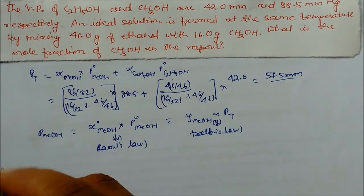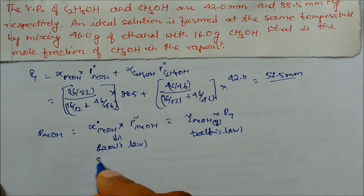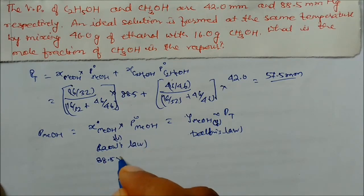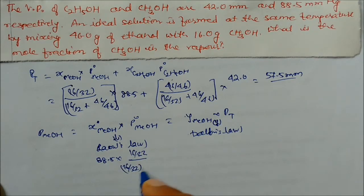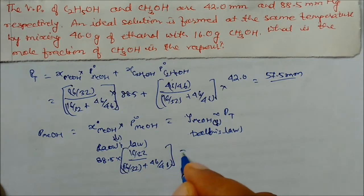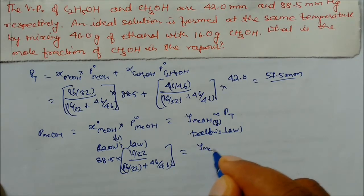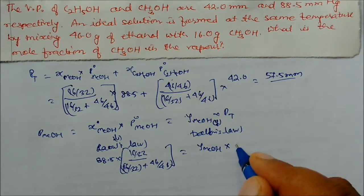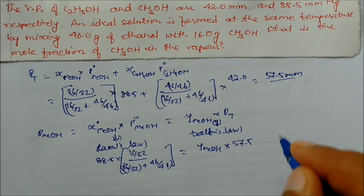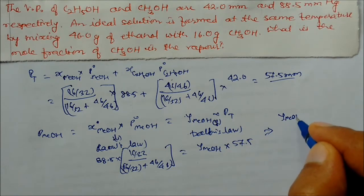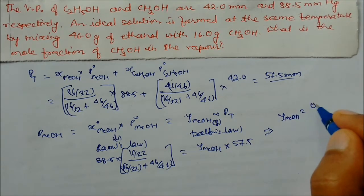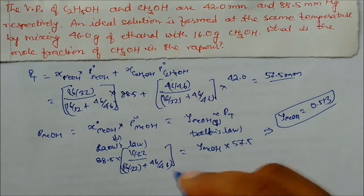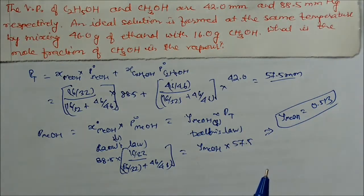Using Dalton's Law with the partial pressure of methanol: 88.5 times (16/32) divided by (16/32 + 46/46), divided by total pressure 57.5. Solving this gives the mole fraction of methanol in the vapor as 0.513.